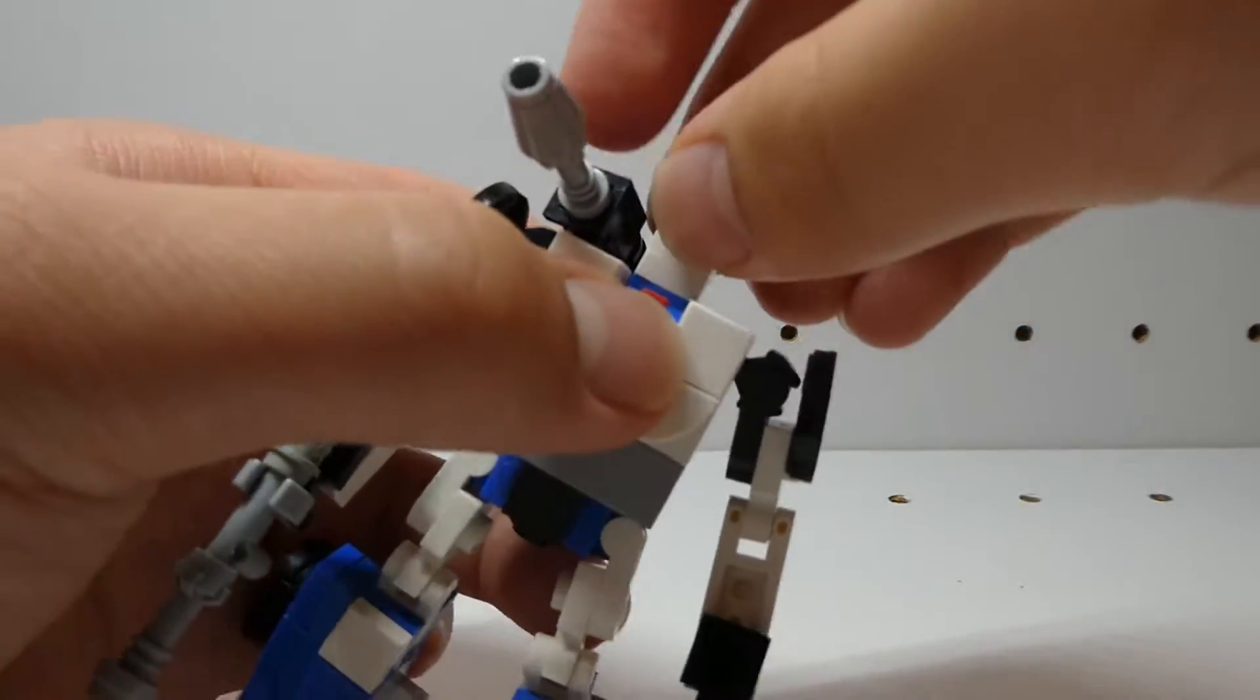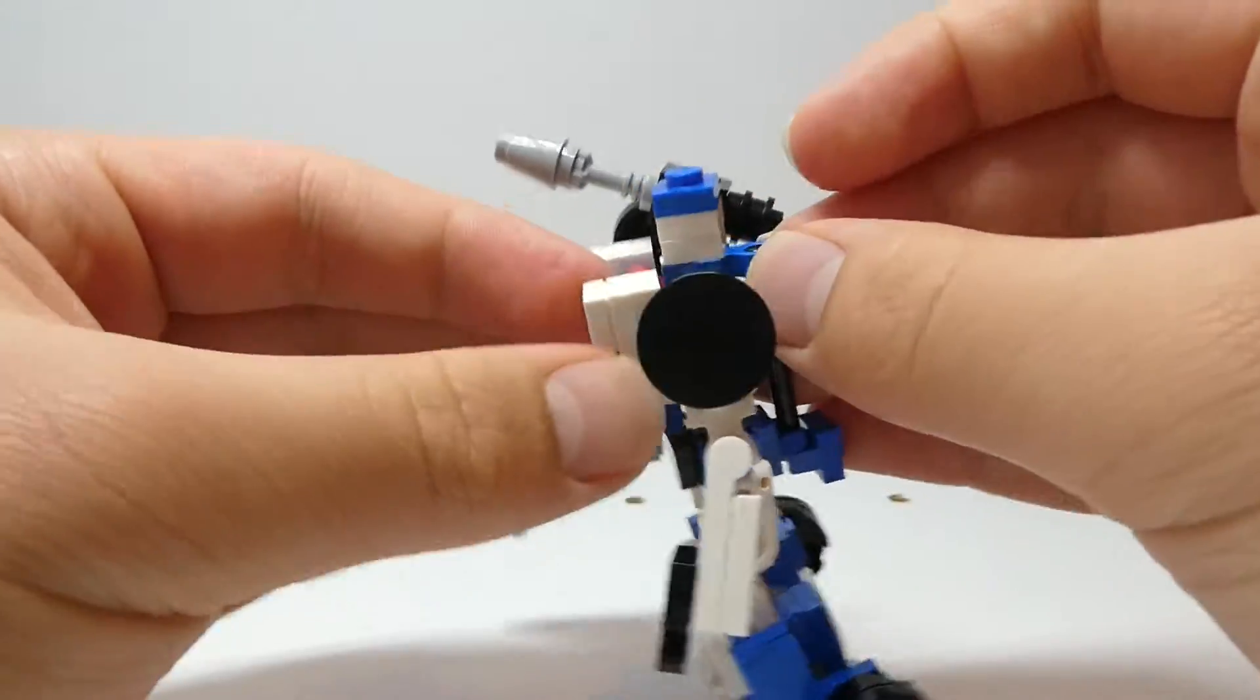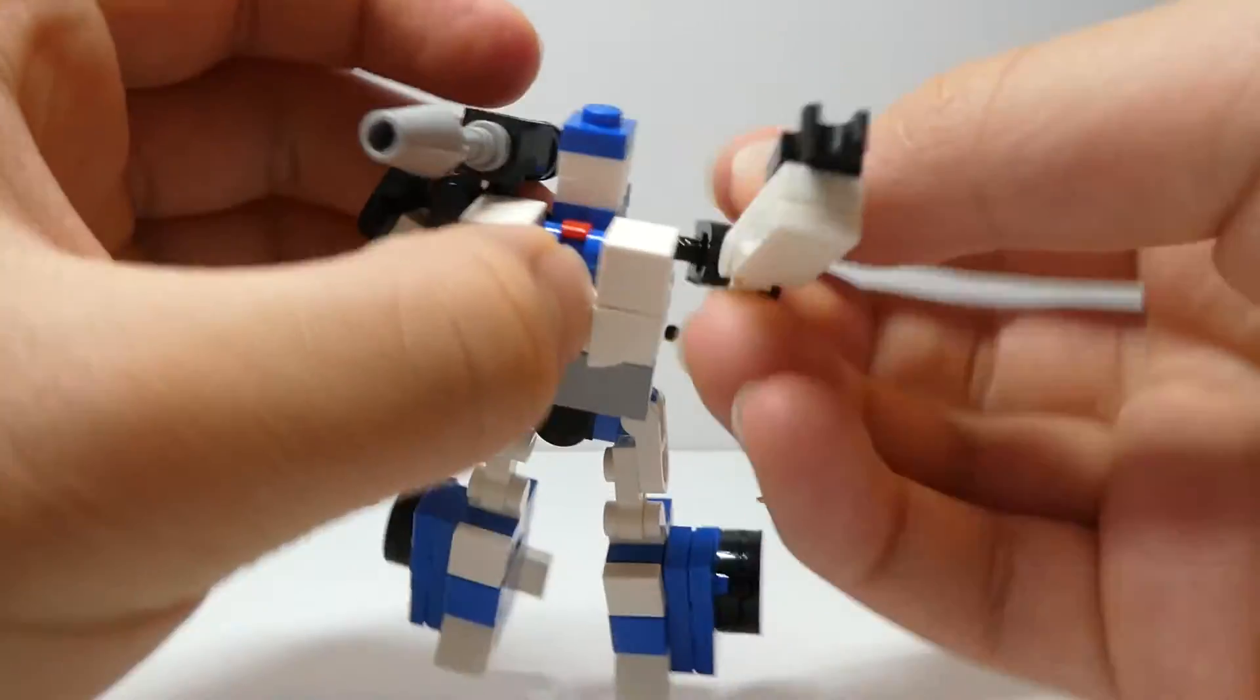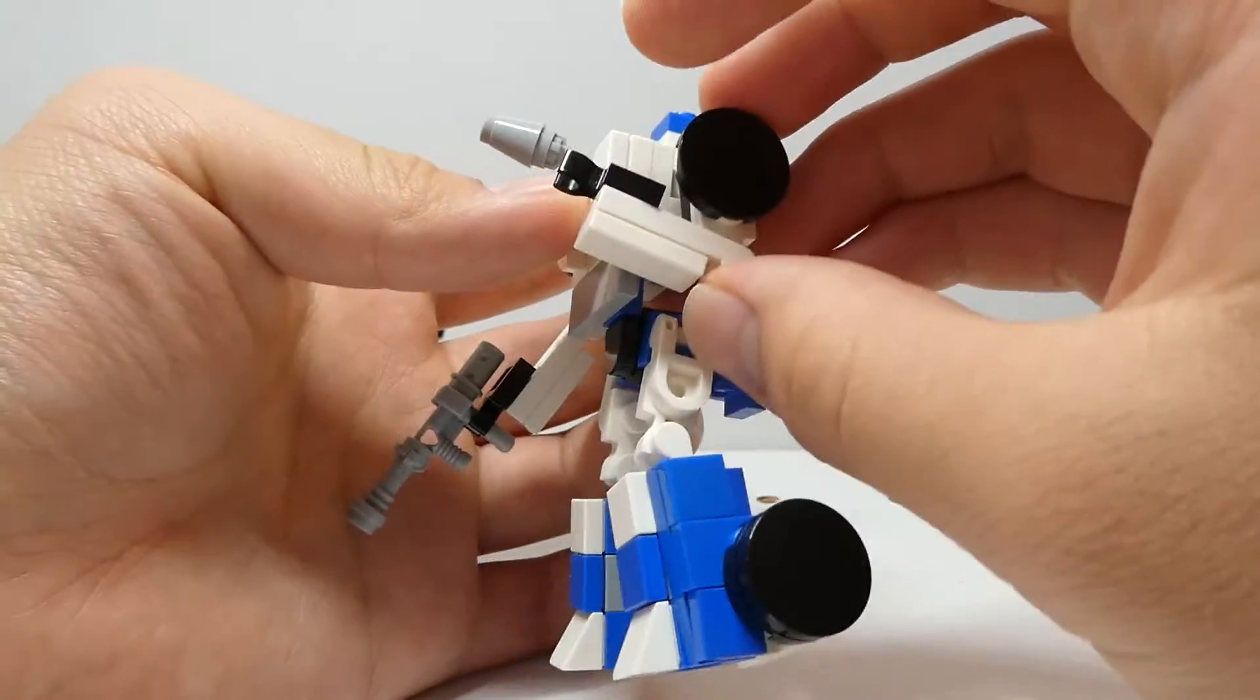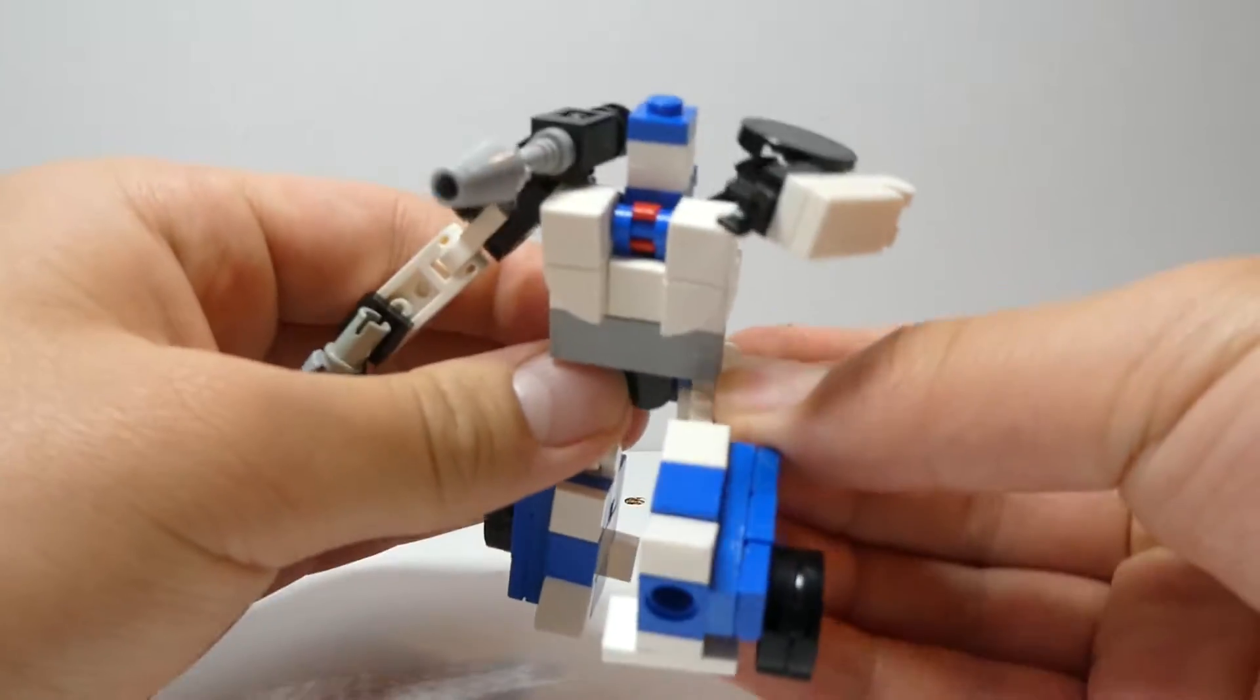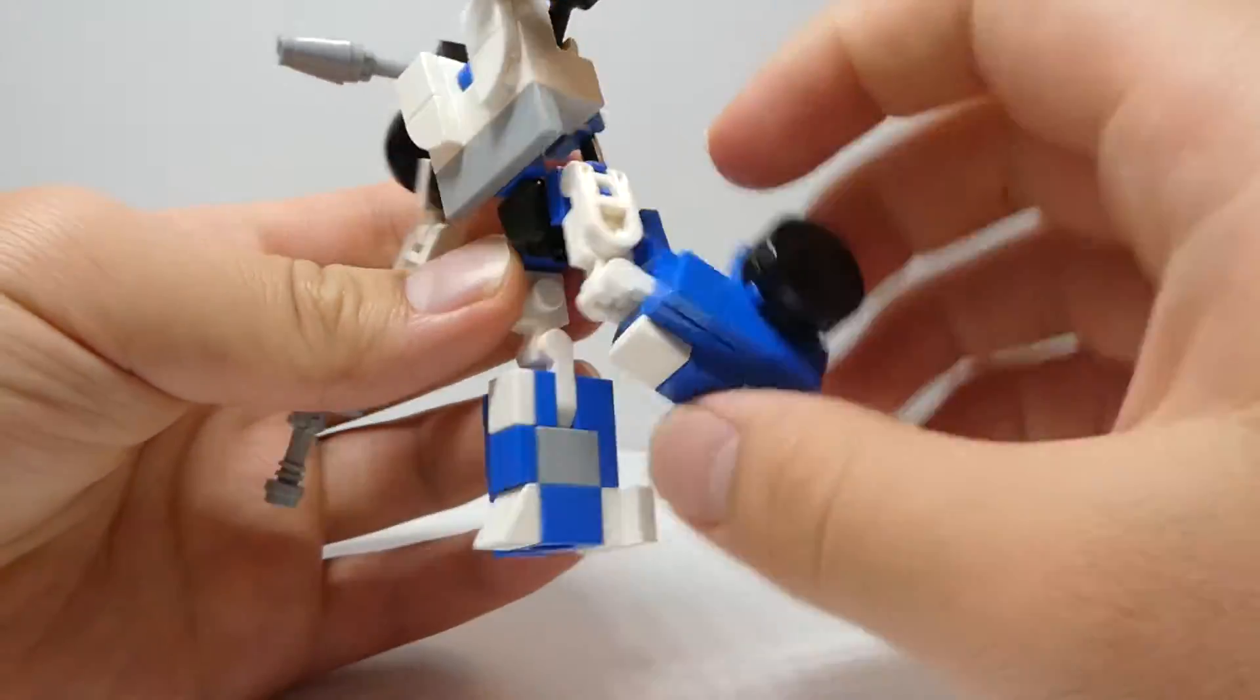So for articulation his head can turn, but might take the whole back section with it because it's only on one stud. The shoulders can rotate 360 because they're on a clip. They can rotate out, they can bend over 90 degrees. The legs can kick forward a lot, they can kick back a lot more, they can bend 90 degrees at the knees.